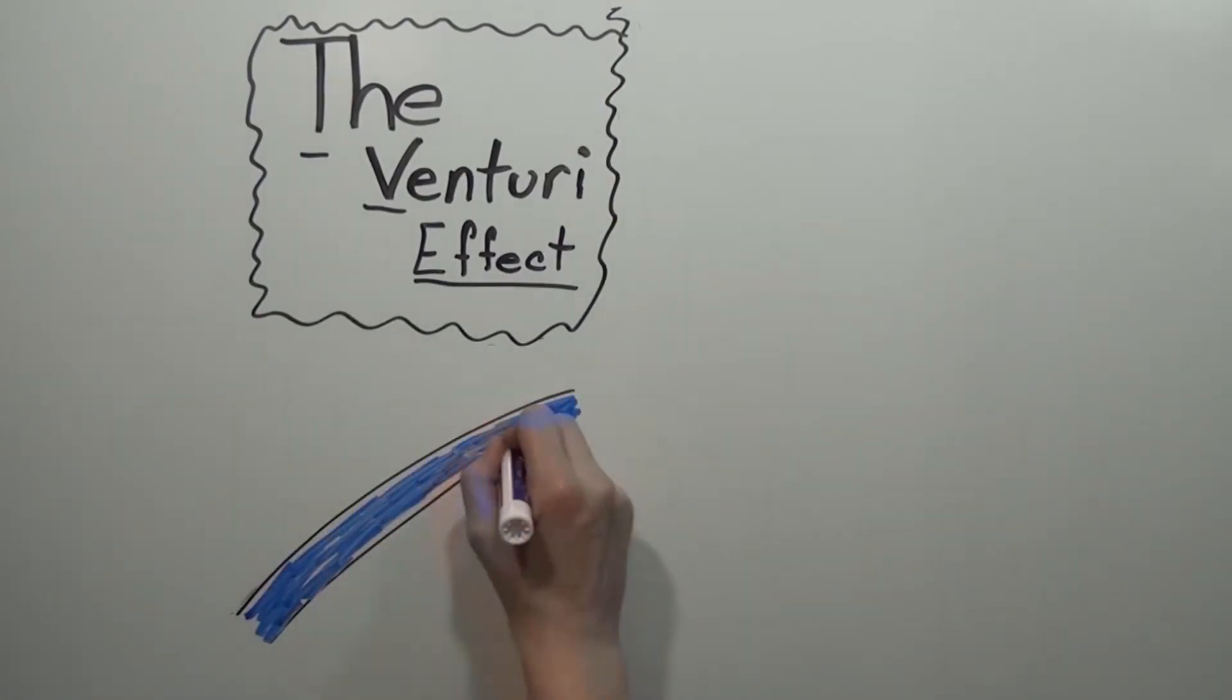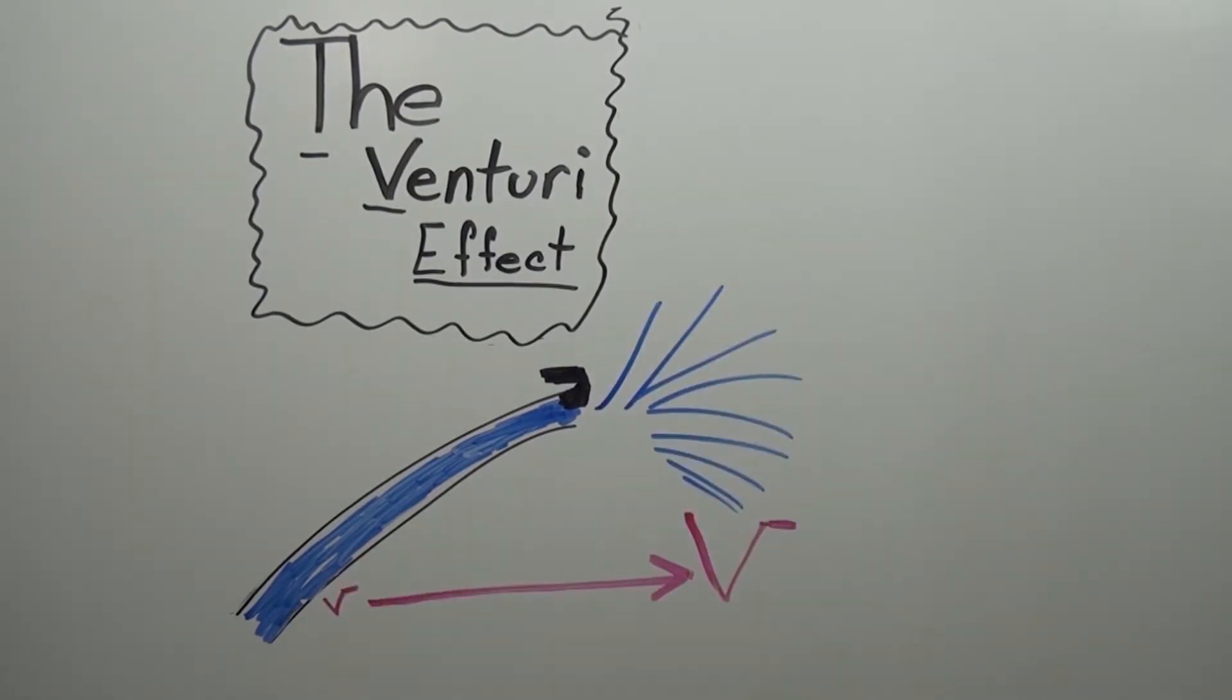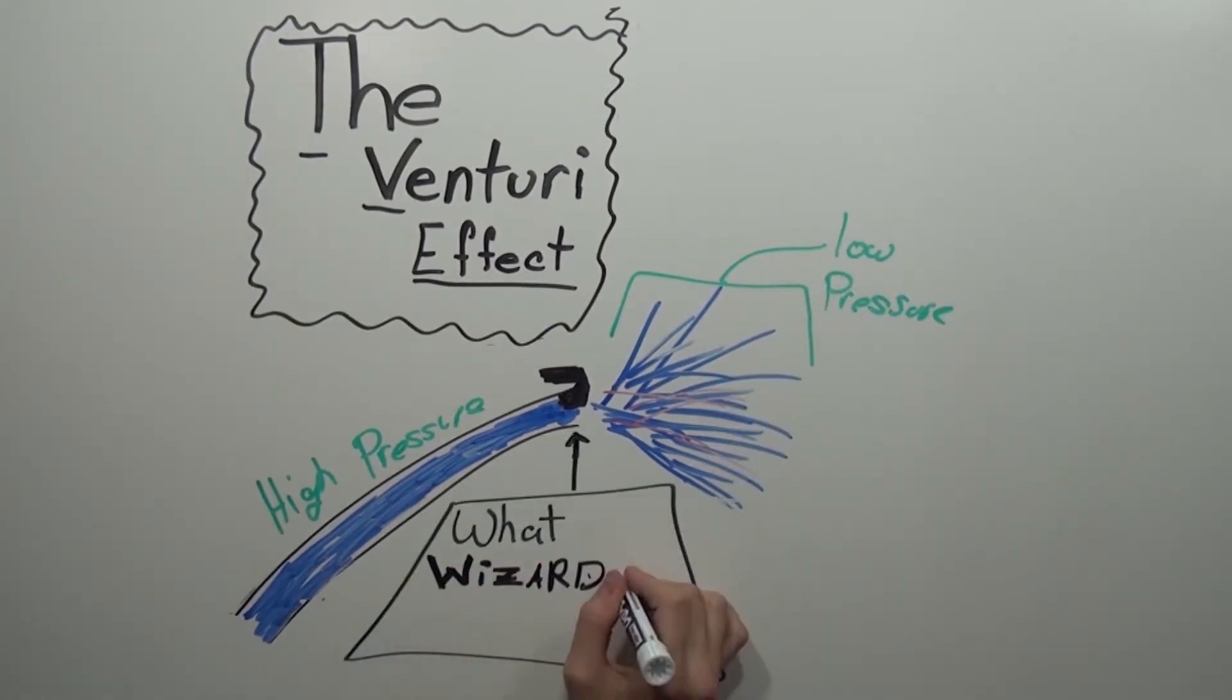Most people have used this without even knowing it. If you've ever used a garden hose at some point in your life, you've probably put your thumb over the end and forced water to shoot out at a greater velocity. This is the embodiment of the Venturi Effect.